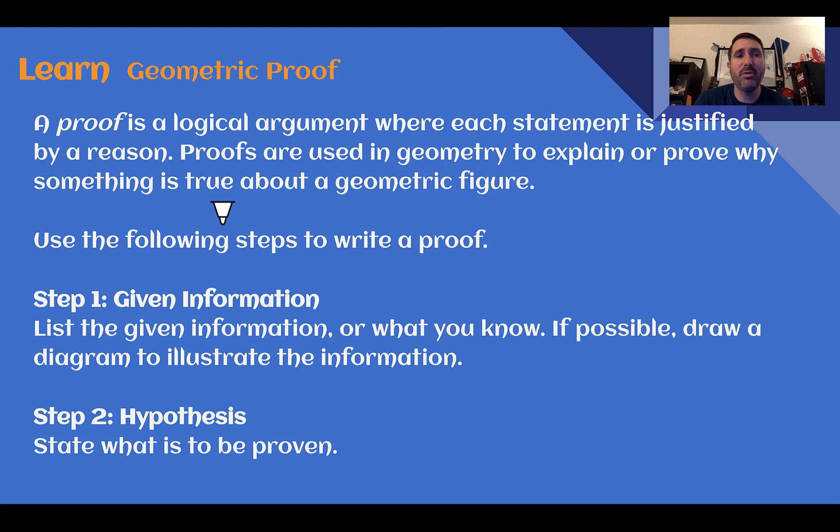Let's learn, geometric proofs. A proof is a logical argument where each statement is justified by a reason. Proofs are used in geometry to explain or prove why something is true about a geometric figure. For the Pythagorean theorem, there are tons of proofs. Now, I'm not going to go through any of them here, but I recommend that you search Pythagorean theorem proofs on YouTube or on the internet, and find some videos that show you visually how we can prove the Pythagorean theorem, and not that we just know that a squared plus b squared equals c squared. Some of them are pretty interesting, and it makes me wonder what some of the people were doing in order to discover that proof in the first place. Go check them out!